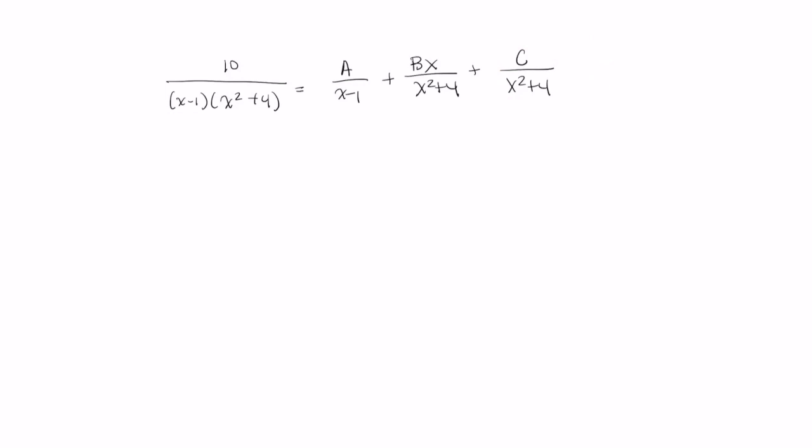And now that that is done, let's multiply both sides by x minus 1 times x squared plus 4. On the left-hand side, this term that we multiplied by matches this denominator. So we'll just end up with 10.